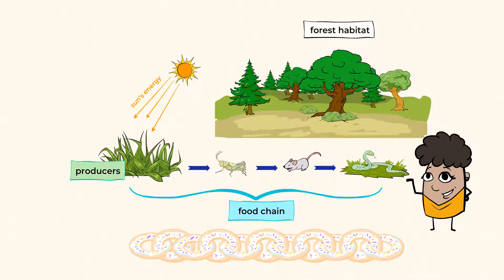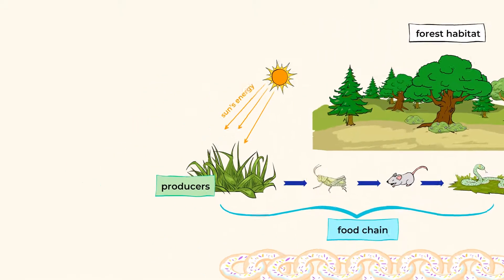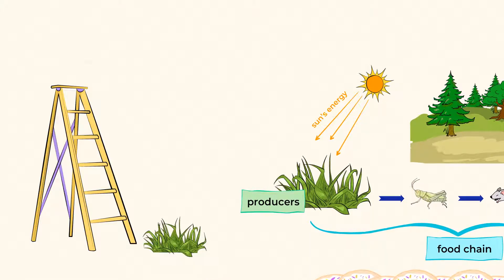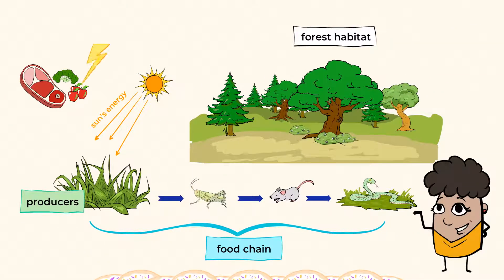In a food chain, the food follows one path. Kind of like a ladder. We start at the bottom with the grass and keep moving up to the snake. Since food provides energy, this chain shows how energy transfers between living things.